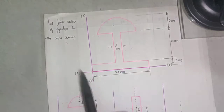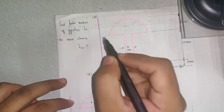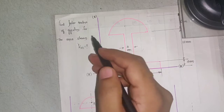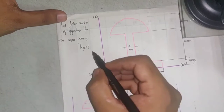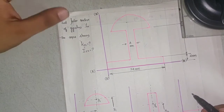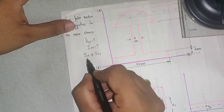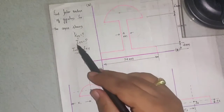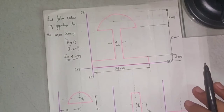In order to find the moment of inertia, the question asks to find the polar radius of gyration, which is kzz. kzz is the polar radius of gyration — that is, radius of gyration about the z-axis. To get kzz I first need Izz, and to find Izz I need Ixx and Iyy, because using the perpendicular axis theorem I can find Izz, and once I have Izz I can calculate kzz.